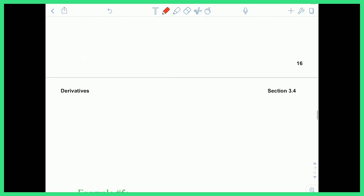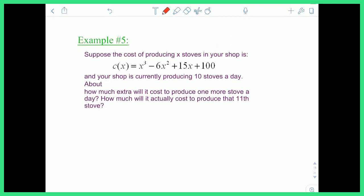Let's look at an example. So here's an example. It says, suppose the cost of producing x stoves in your shop is given by this cubic polynomial, and your shop is currently producing 10 stoves a day. About how much extra will it cost to produce one more stove? And how much will it actually cost to produce that 11th stove?